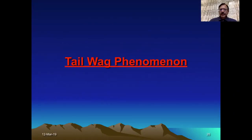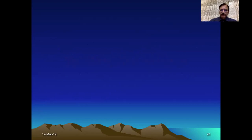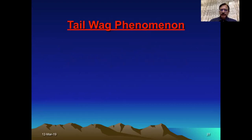Now the tail wag phenomena. This is another specific phenomenon which is shown by the bullet when it leaves the barrel. That means the tail wags around its own axis — it wags unstably.